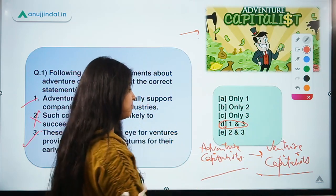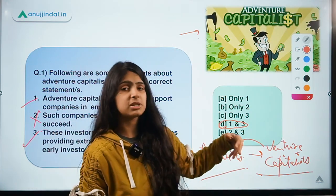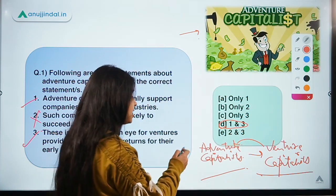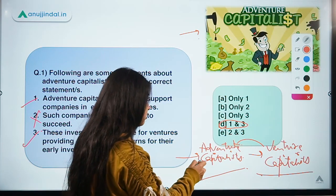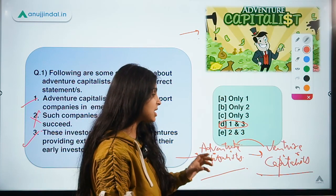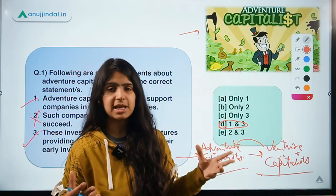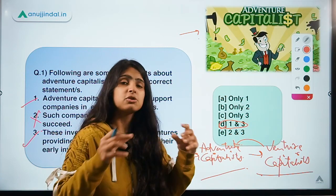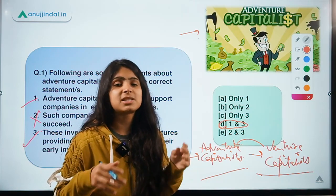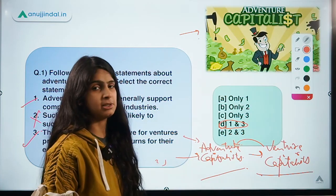Now we are making 'venture' turn into 'adventure.' Venture capitalists already have a good risk appetite — they are risk-taking entities. But when you add 'adventure' to it, they become even more risk-taking. The top venture capitalists who can take more risk than the others are known as Adventure Capitalists.